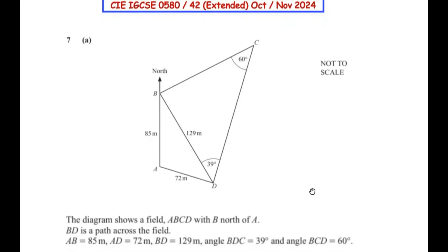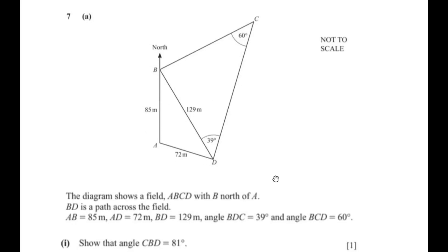The diagram shows a field ABCD with B north of A. BD is a path across the field. AB is 85 meters, AD is 72 meters, BD is 129 meters, angle BDC is 39 degrees, and angle BCD is 60 degrees. We need to show that angle CBD is 81 degrees.